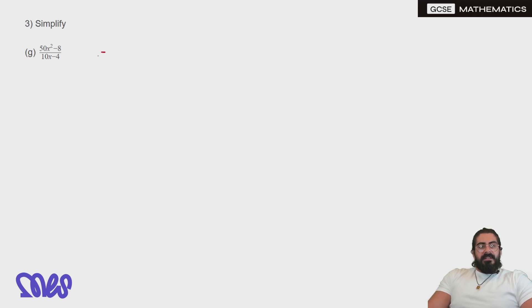50x squared minus 8. Now here it's looking like difference of two squares, but really 50 and 8, we could do it, but they're not square numbers. I'd rather factorize out 2 first. So we get 25x squared minus 4 over. Then on the bottom again, we can take out a 2. We would have 5x minus 2. In fact, we can cancel out the 2's now.